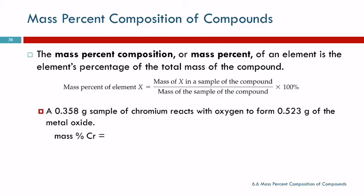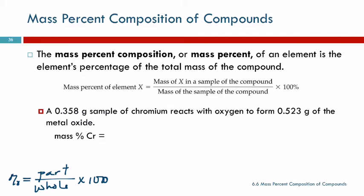The general formula for percent is the part that you're interested in divided by the whole thing times 100. The mass of X and the mass of the compound are going to have the same unit — those units cancel out — and we end up with a unit of percent because we're multiplying by 100 percent. You do not use a percent button on your calculator. We're just multiplying by 100 and treating percent as a unit.